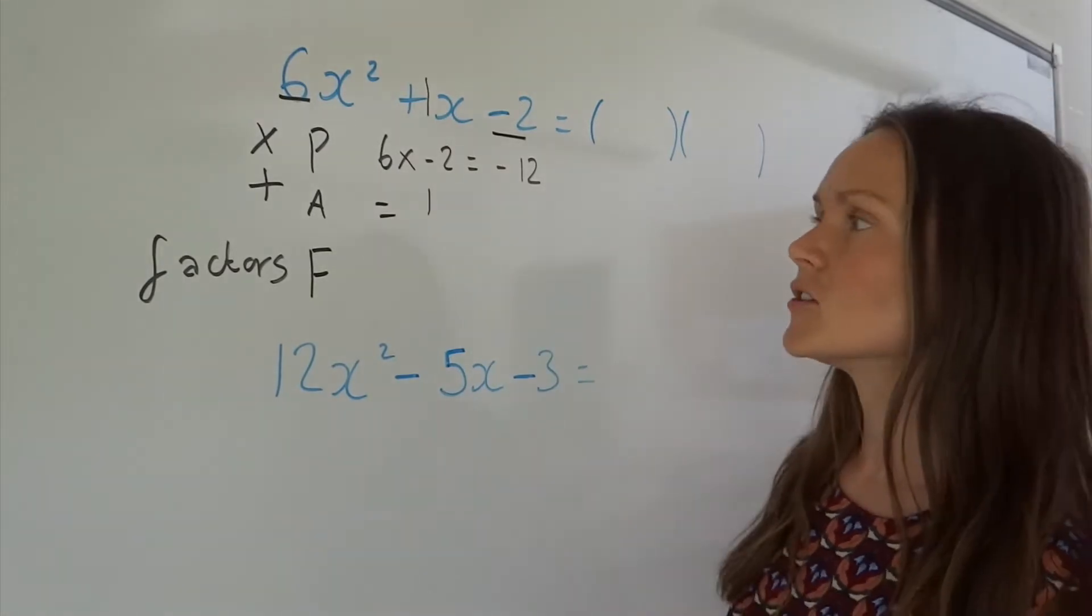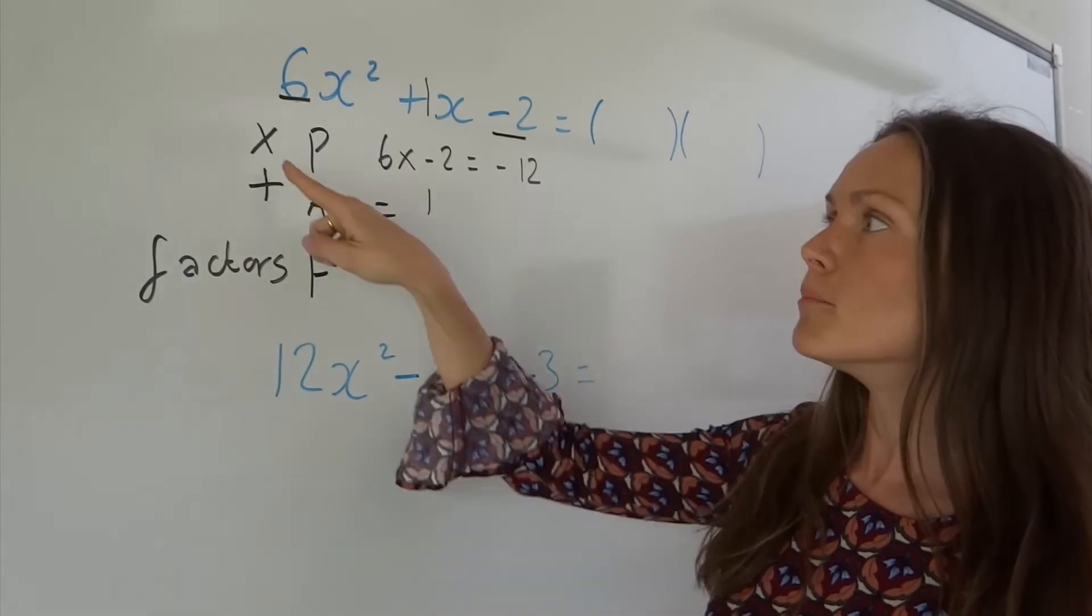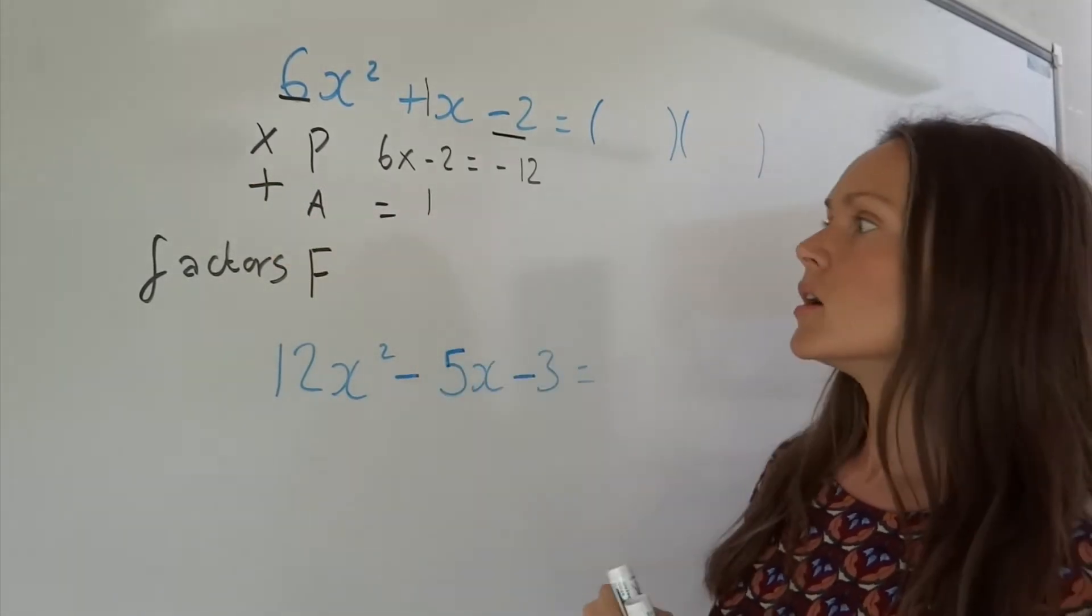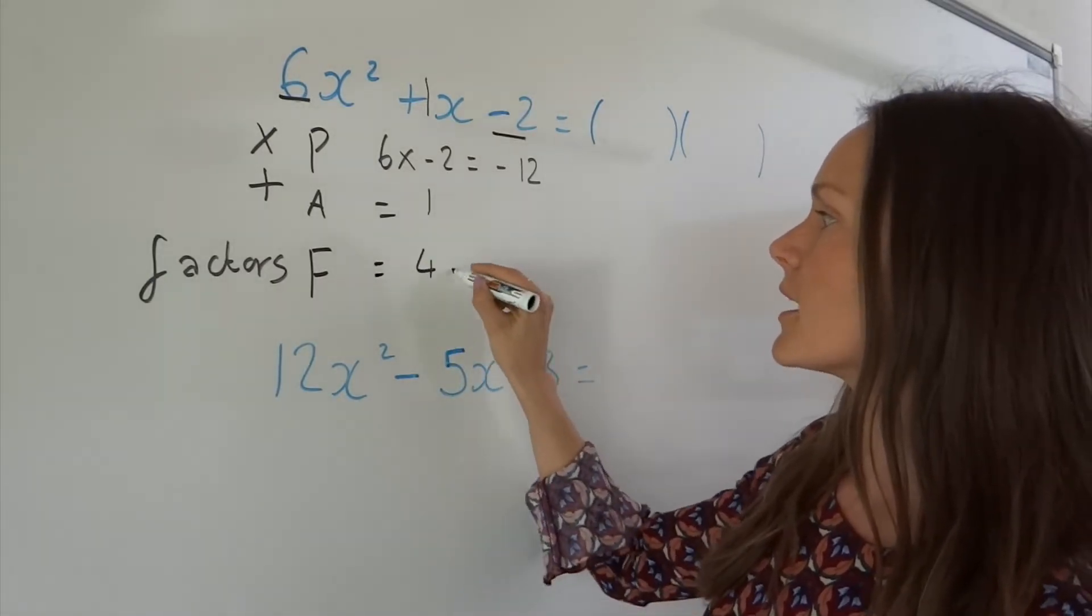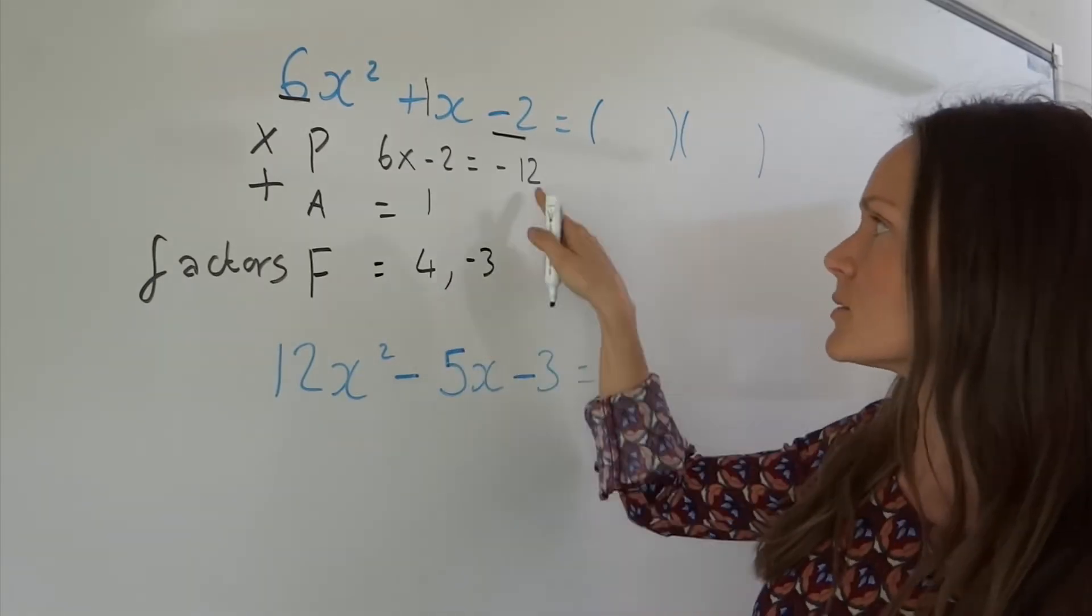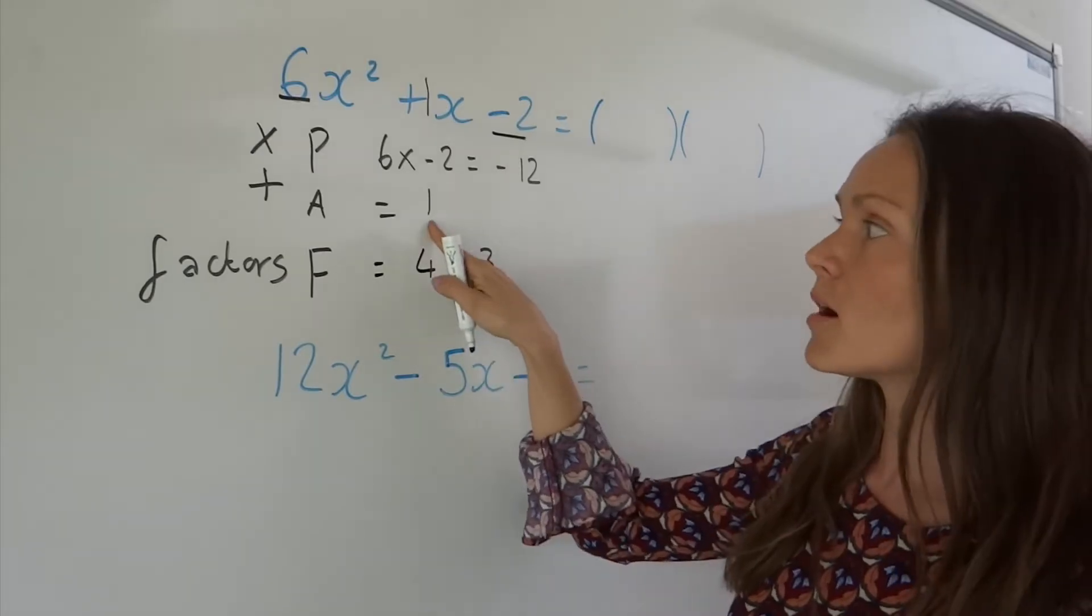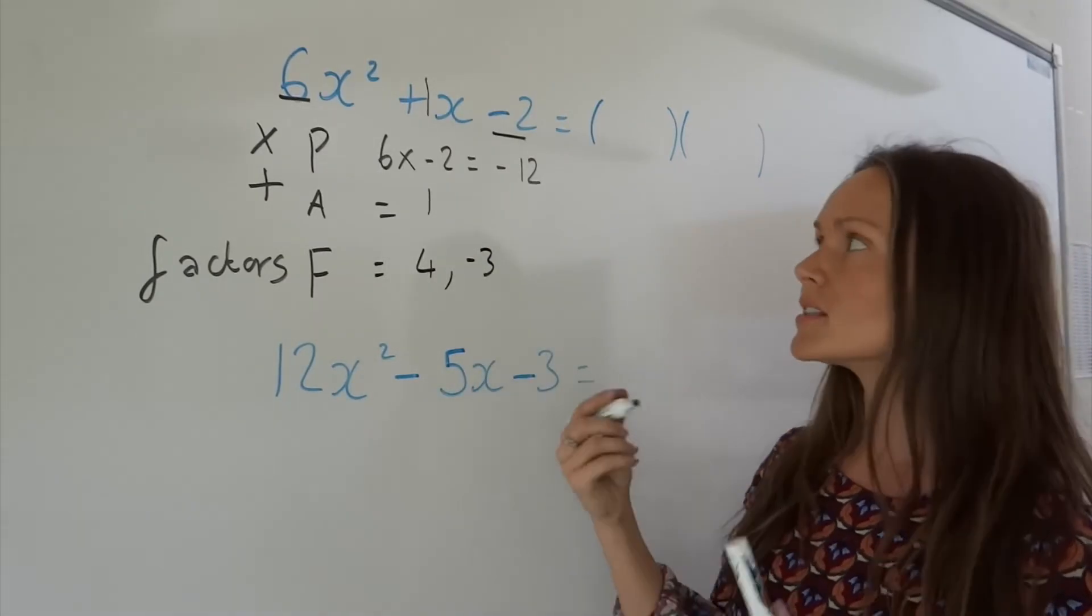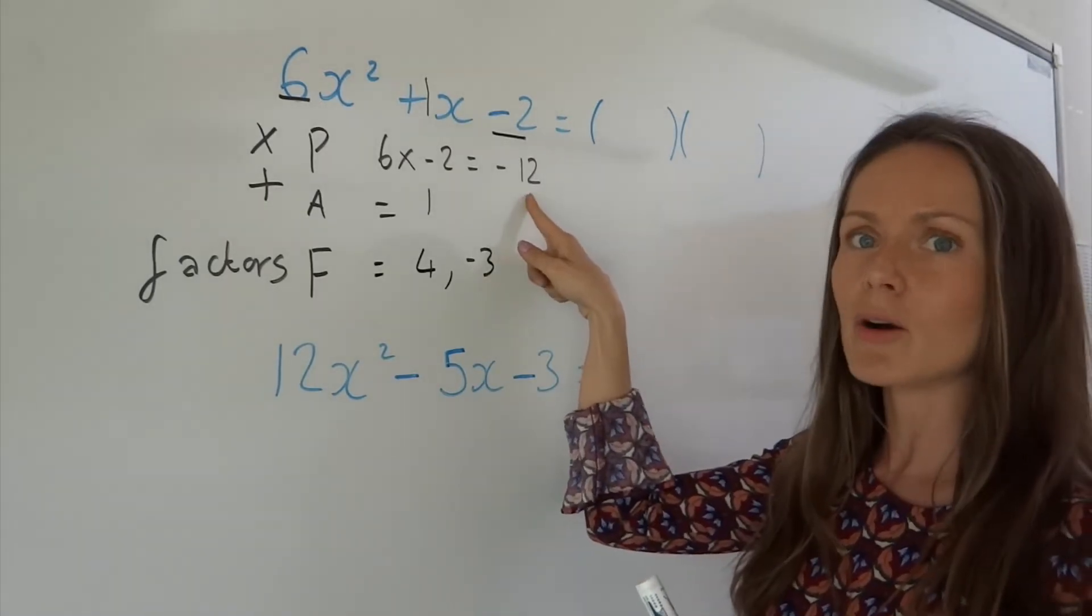Now for the factors, you have to think, what two factors, what two numbers multiply to give negative 12 and add to give 1? Well, I know those factors must be 4 and minus 3, because 4 multiplied by minus 3 is minus 12, and if I add those two numbers together, I get positive 1.